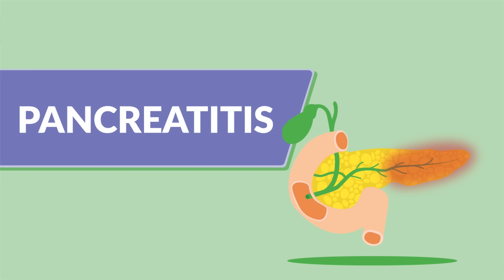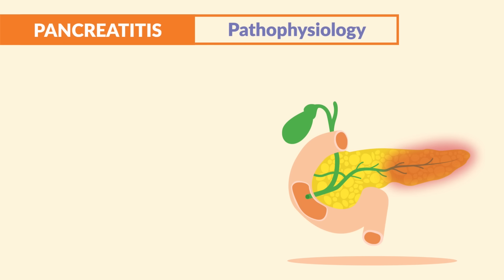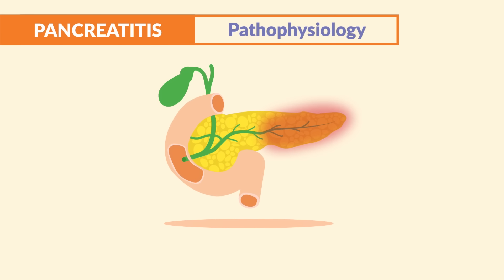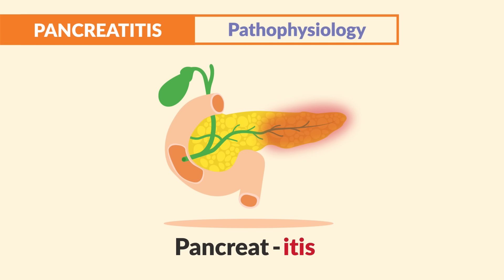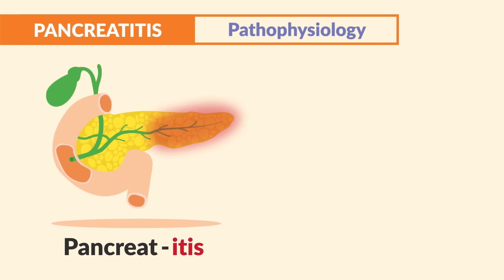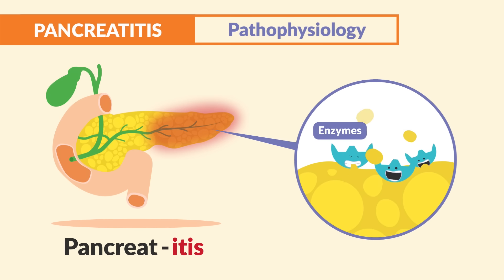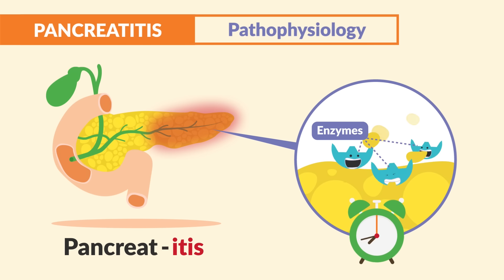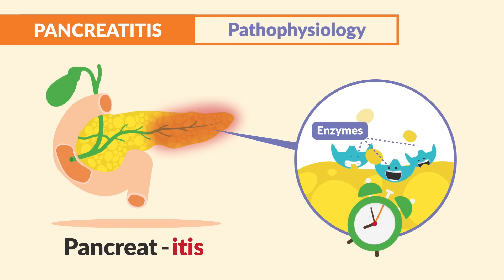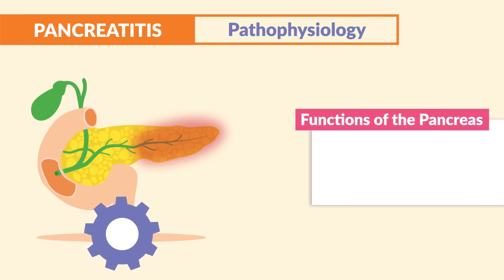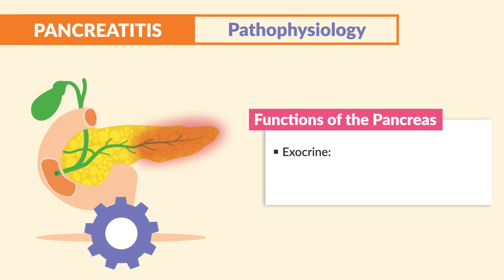For pancreatitis, the pathophysiology is very simple. In pancreatitis we have inflammation of the pancreas — anytime you see the suffix '-itis' just think inflammation. This inflammation comes from auto-digestion of the pancreas; basically the pancreas's own digestive enzymes have accidentally activated early.